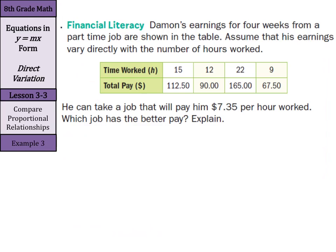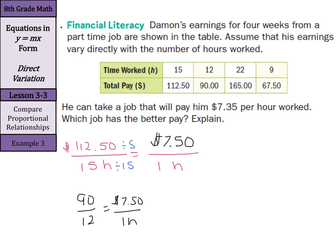Let's look at his time worked per hour here. We have $112.50 for 15 hours. How much does he make in one hour? Divide by that 15 on top and bottom, and that equals $7.50 an hour. That would be true if you did $90 over 12 would be $7.50 per hour. The $165 for 22 would get you to $7.50 an hour. And the $67.50 divided by 9 hours would also get you $7.50 per hour.